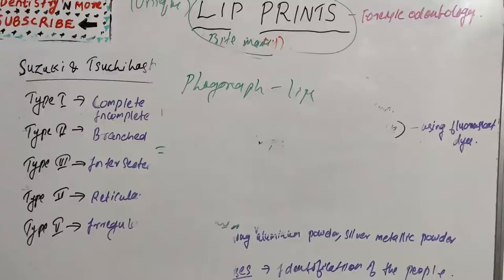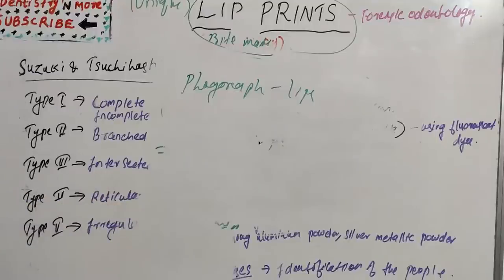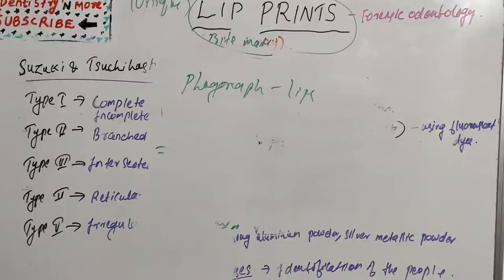A lip print recorded from the crime scene is matched with a lip print taken from the suspect to perform person identification. Lip prints have the same value as fingerprints and provide a very powerful tool for identification because they are very unique, do not change during a person's lifetime, and can be most frequently found during murders, rapes, and other crime scenes.